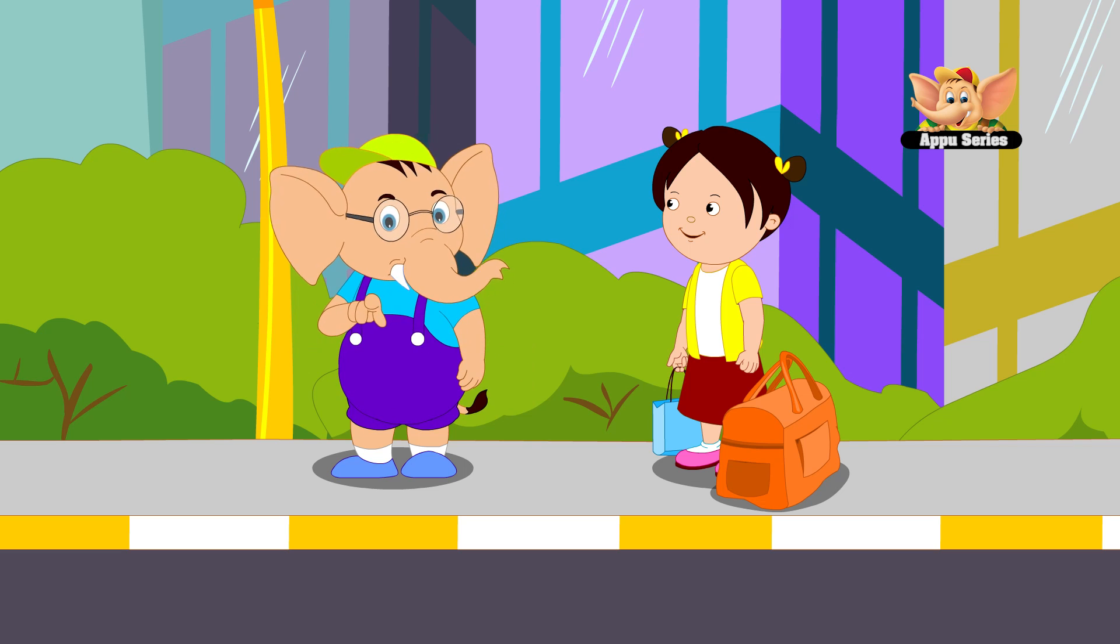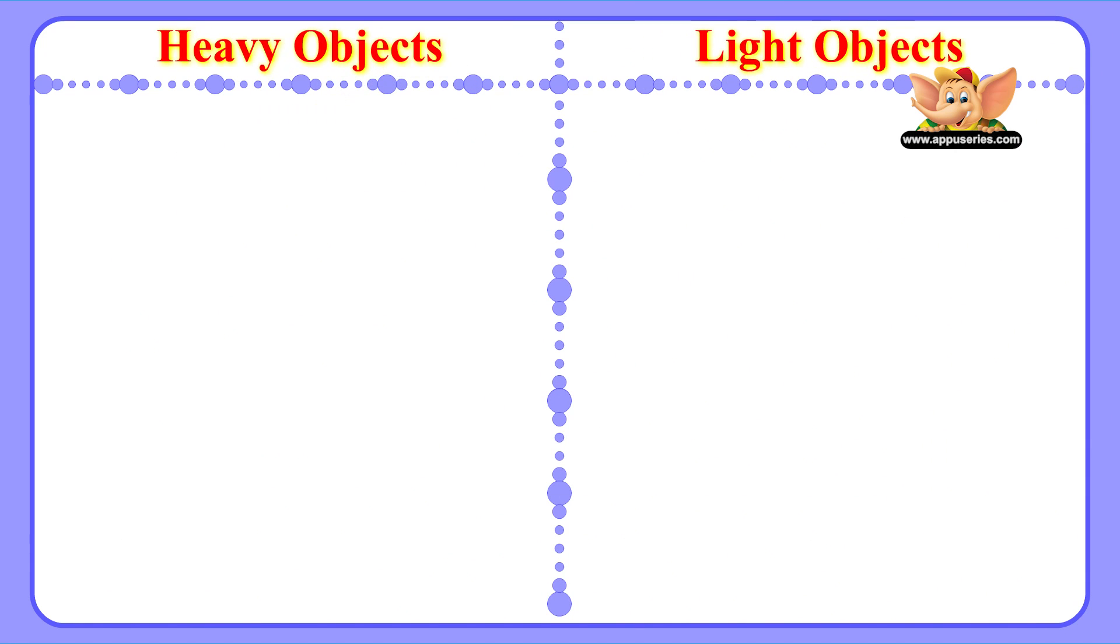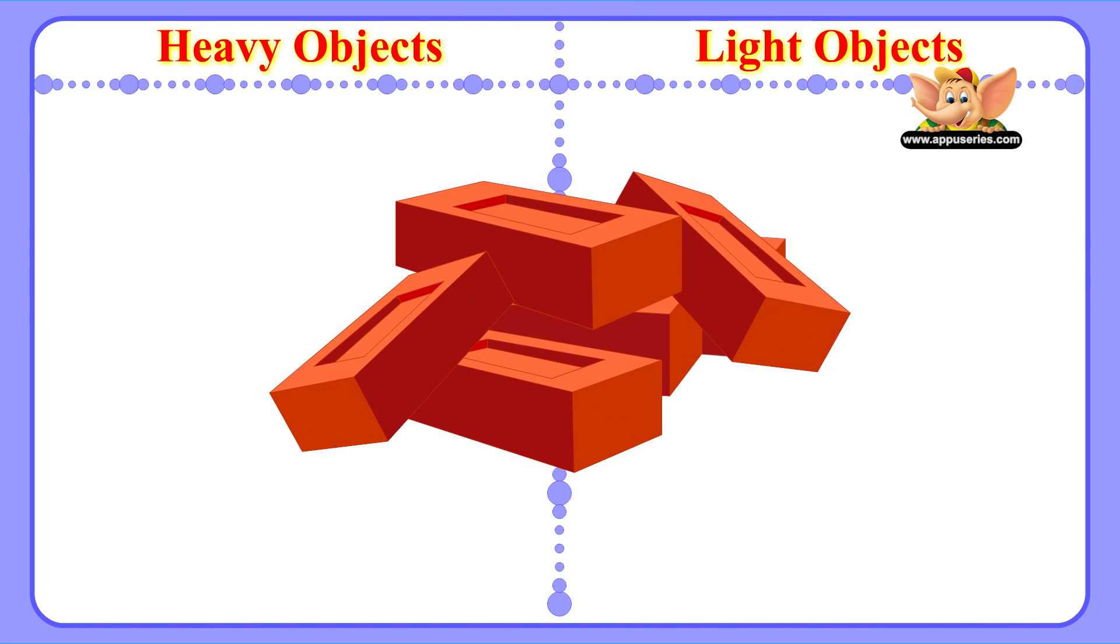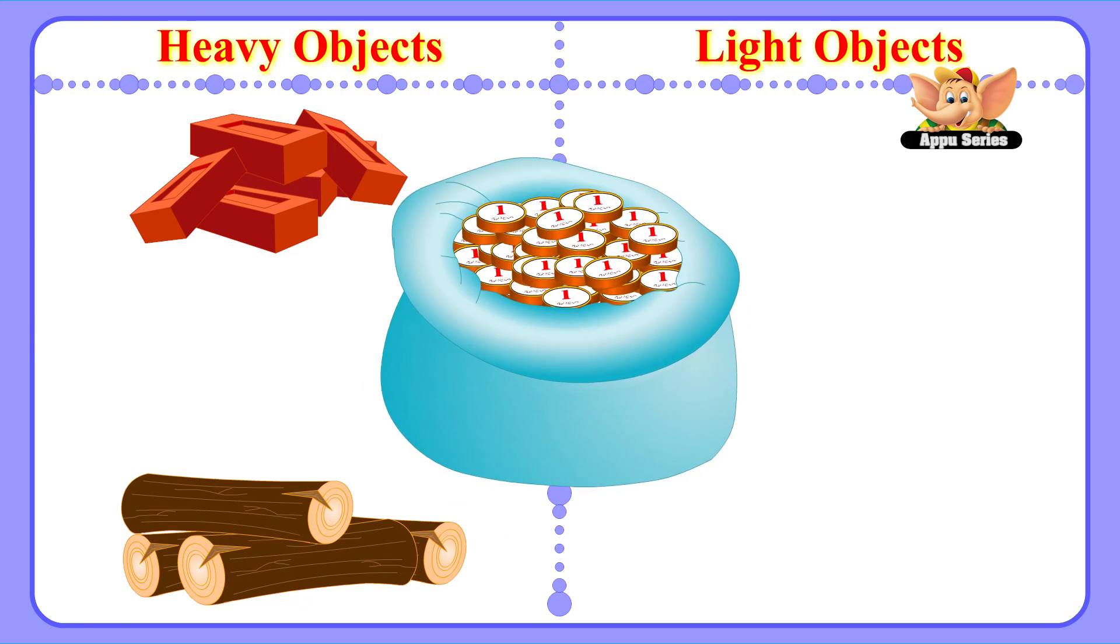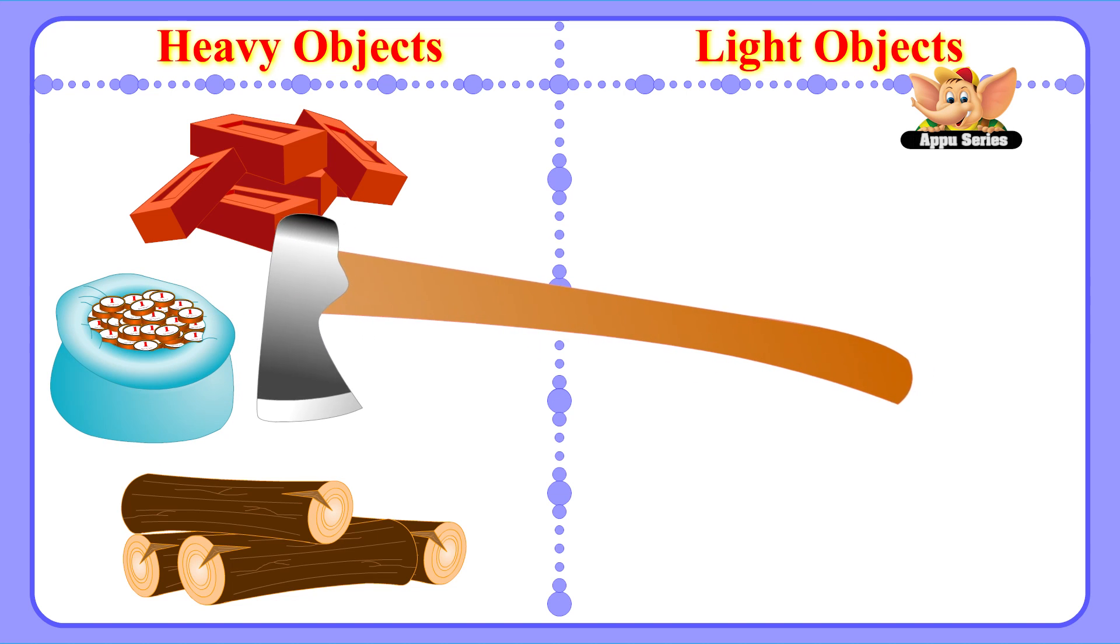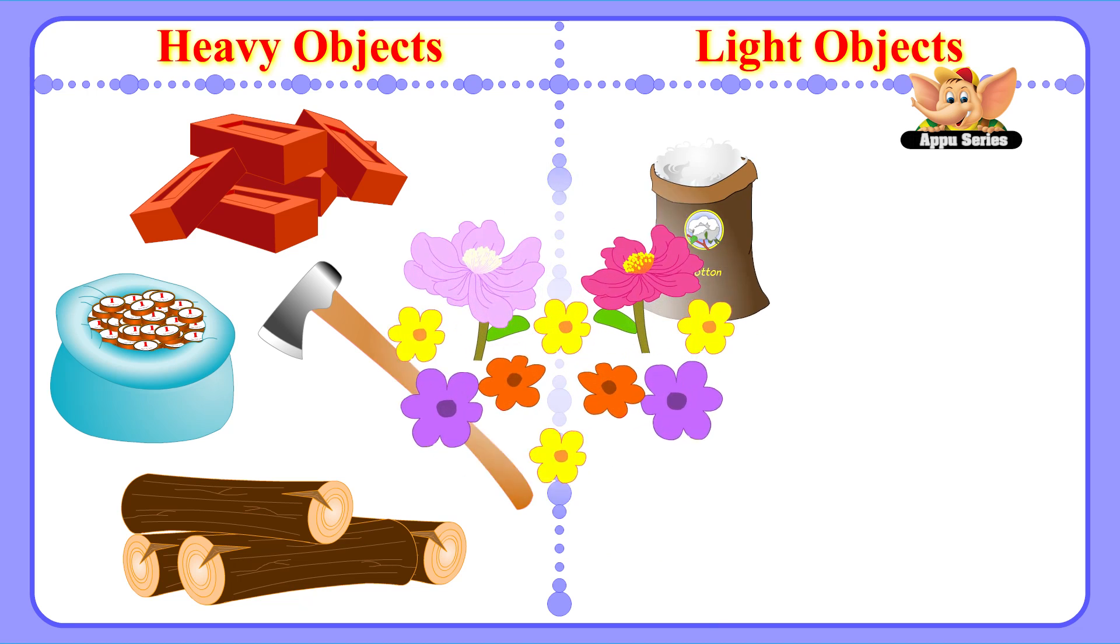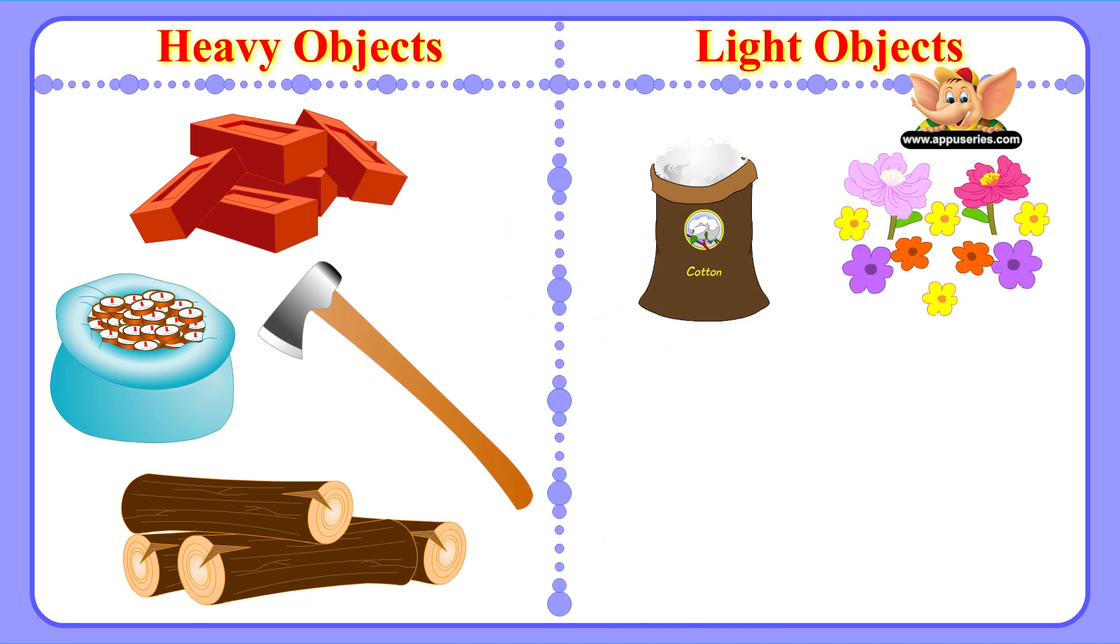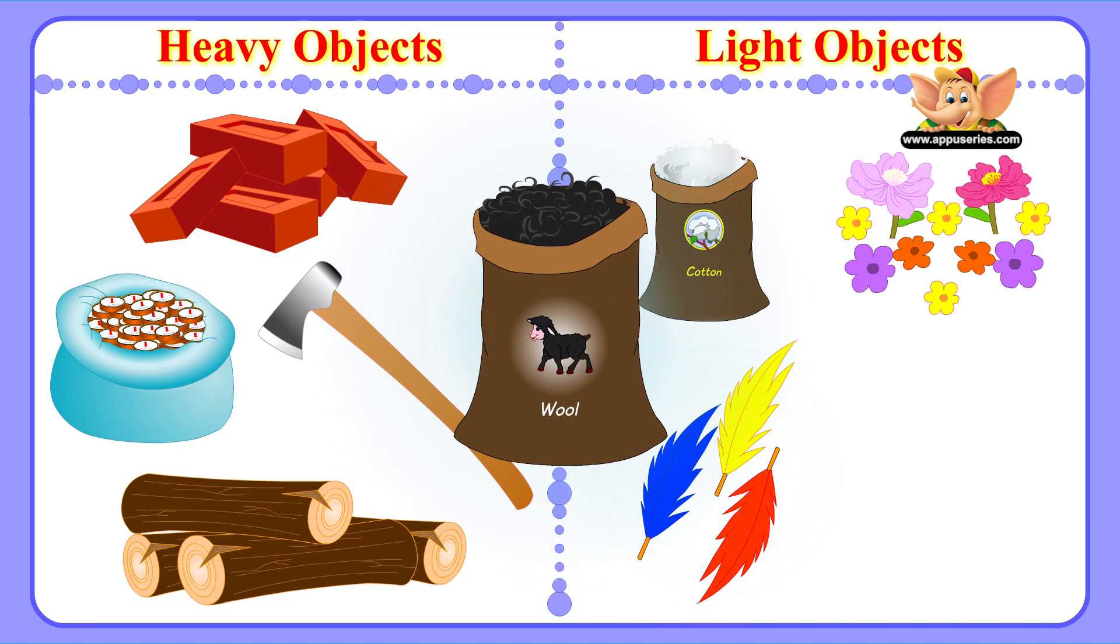Now, let's see some examples of heavy and light objects. Some of the heavy objects are bricks, logs, bag of coins, an axe. Cotton, flowers, feathers, and wool are some of the light objects.